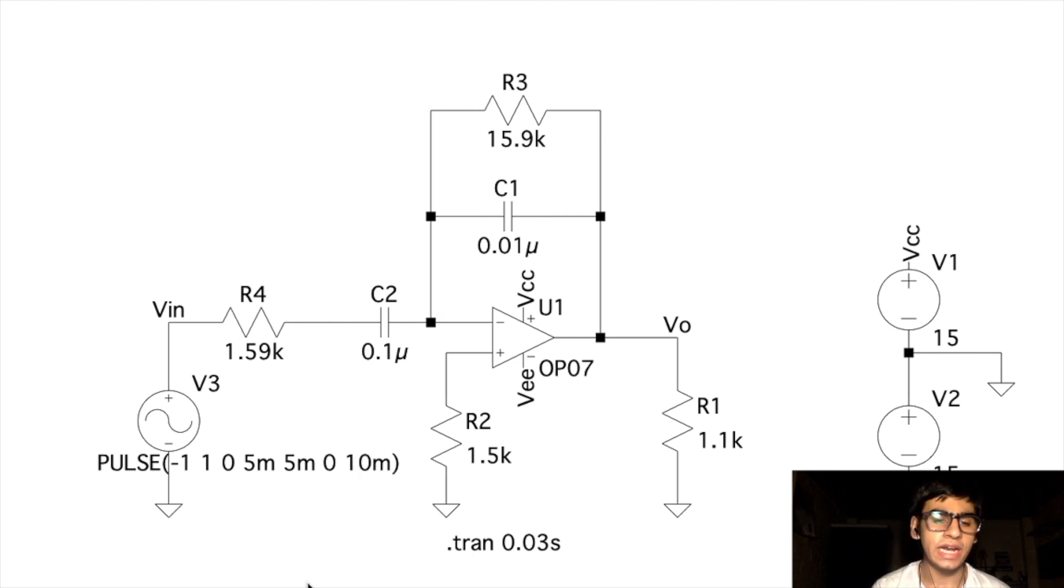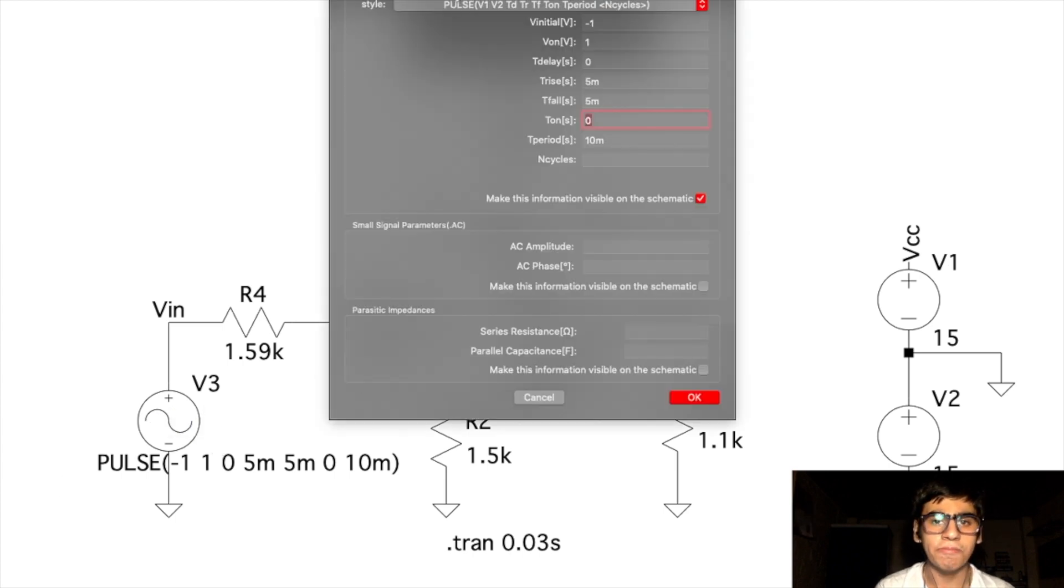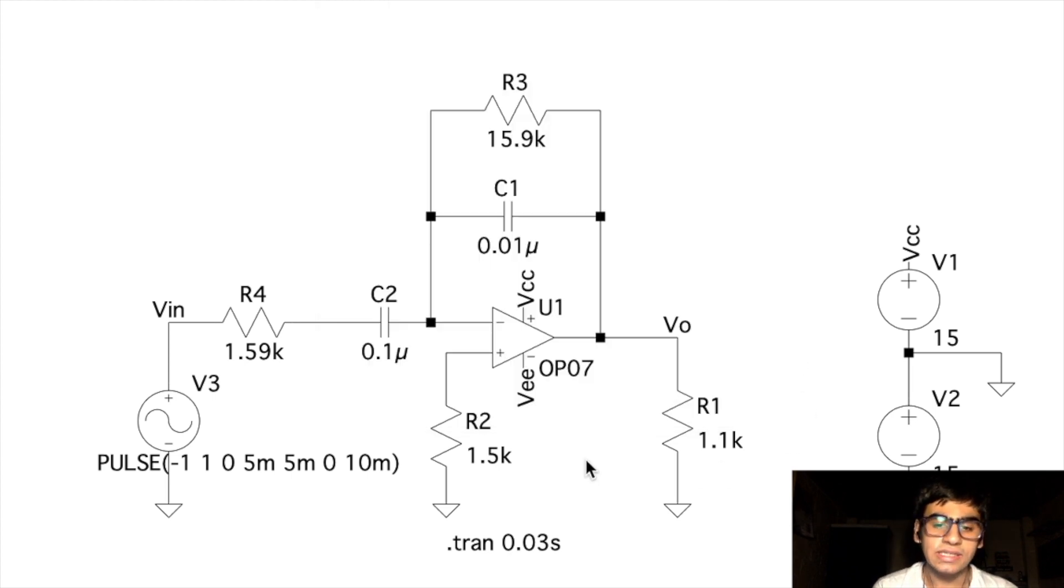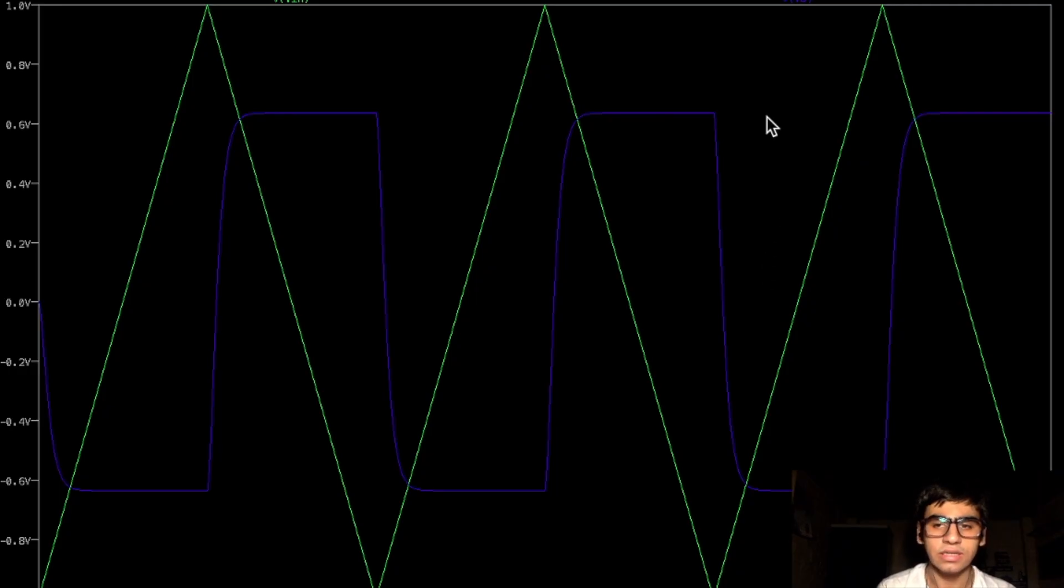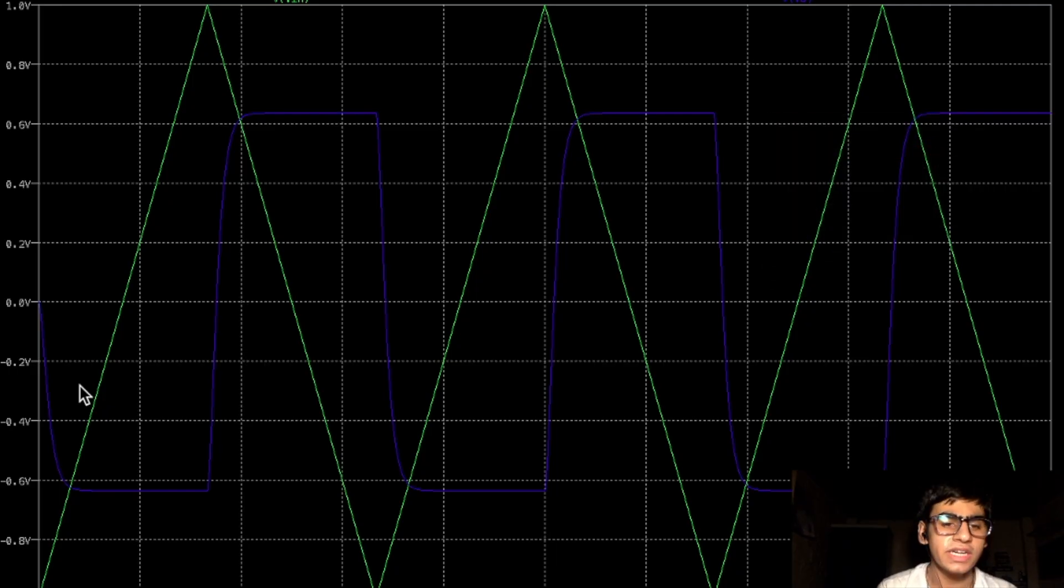Finally, for the transient analysis of an input triangular wave, we set our input sinusoidal signal component as a pulse signal with these parameters. Running this simulation for transient analysis of 0.03 seconds, we get this result. Here we can clearly see that given an input signal which is triangular, we get output signal which is a square wave.